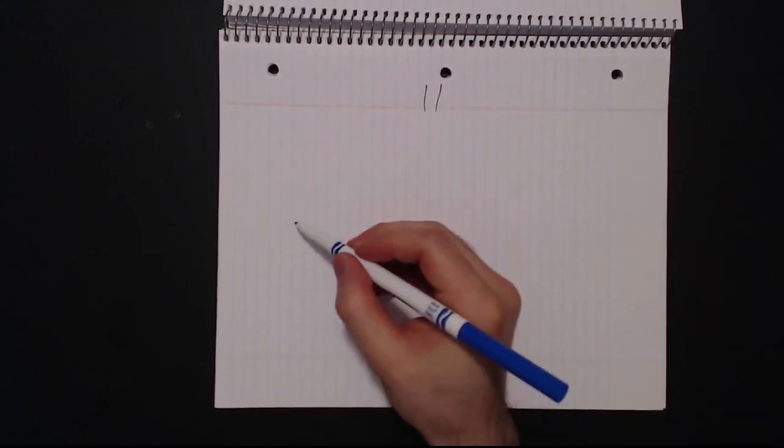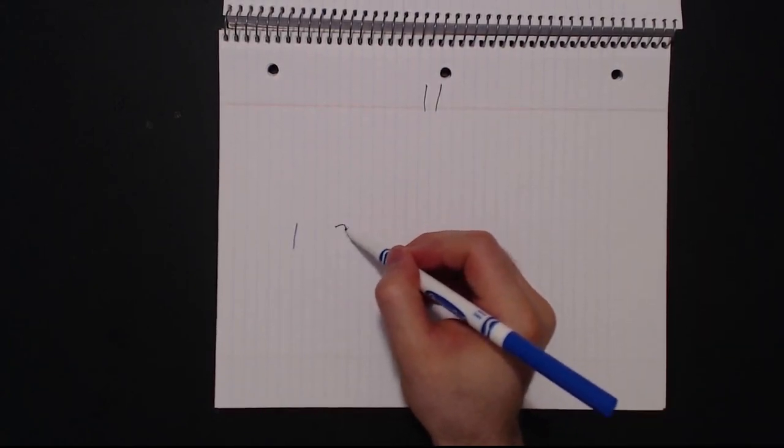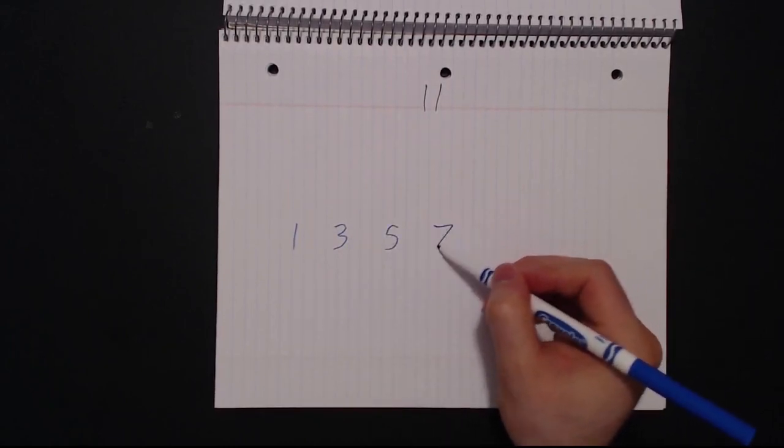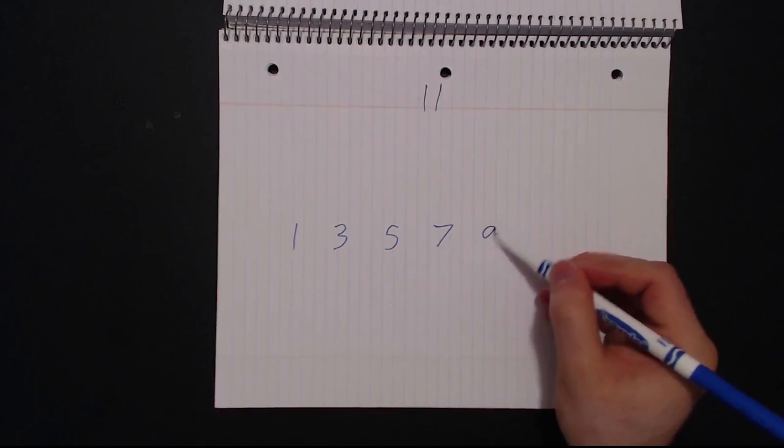Let's start with the number 11. Count the odd numbers from 1 to 11: 1, 3, 5, 7, 9, and 11.